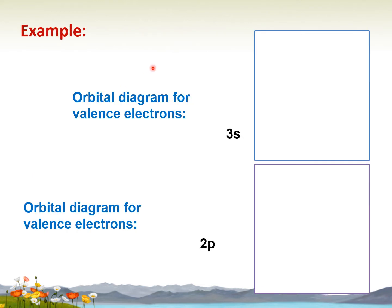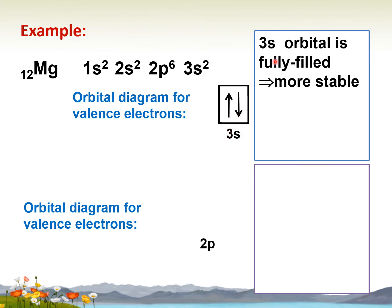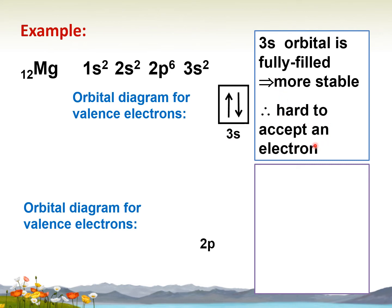For example, magnesium has proton number 12. The SPDF notation is 1s², 2s², 2p⁶, 3s². The orbital diagram for the valence electrons shows 3s², meaning in this one orbital we have two electrons. The 3s orbital is fully filled, making it more stable and hard to accept an electron.